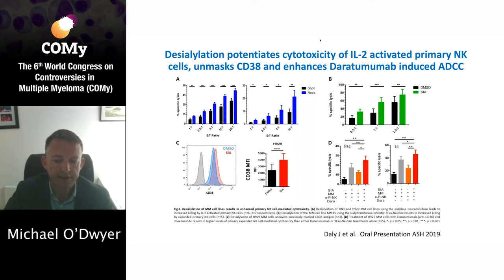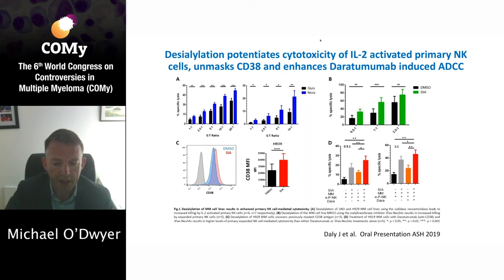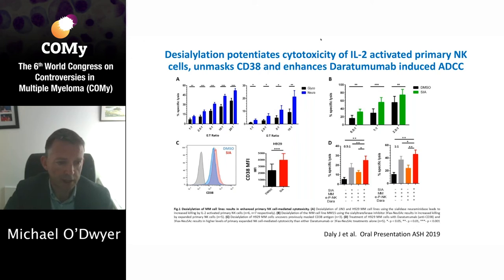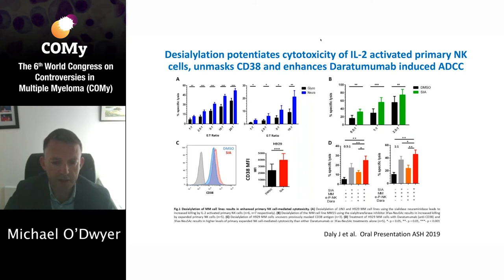We also know that Siglec-7 is strongly expressed on most bone marrow NK cells from patients with multiple myeloma. Using two different approaches — one using an enzymatic approach with a sialidase enzyme known as neuraminidase, and the other with a sialyltransferase inhibitor — we were able to sensitize myeloma cells to killing by primary NK cells, as shown in the two upper panels. Interestingly, in figure C, treatment with the sialyltransferase inhibitor also led to unmasking of CD38, which was associated with enhanced ADCC in the presence of daratumumab, suggesting that in the absence of cell surface sialylation, there is enhanced ADCC with daratumumab.